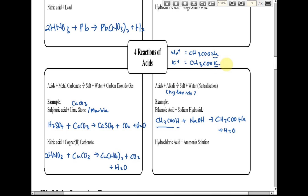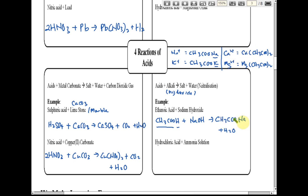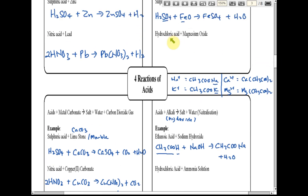If the charge of the ion is +1, the metal goes at the back. But if the charge is +2 or +3, like calcium or magnesium, we write the metal in front: Ca(CH₃COO)₂ and Mg(CH₃COO)₂. So if the metal charge is +1, it goes at the back; if +2, it goes in front.